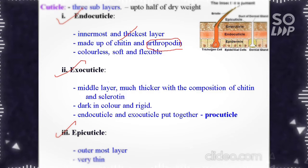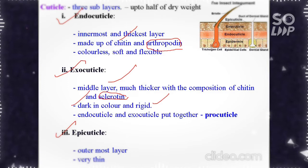The exocuticle is the middle layer, much thicker with composition of chitin and sclerotin. The sclerotin protein is very hard, so the exocuticle is dark in color and more rigid. The endocuticle and exocuticle together are called the procuticle.